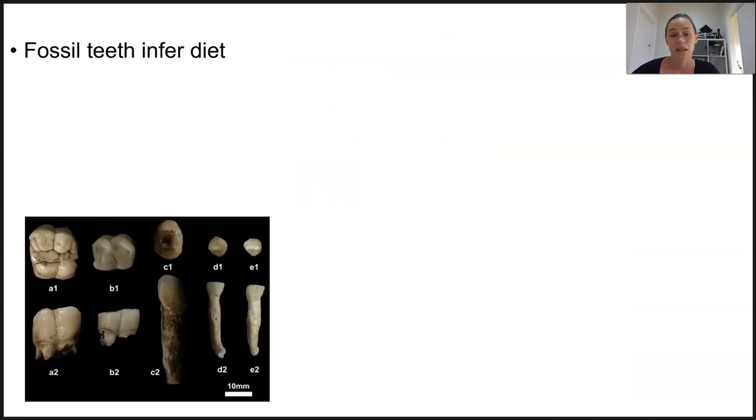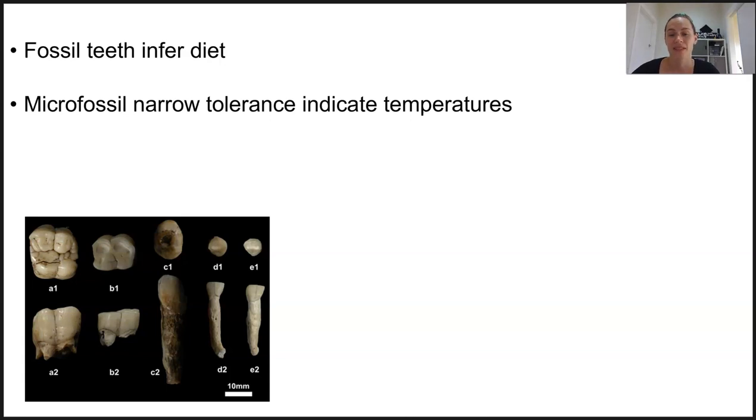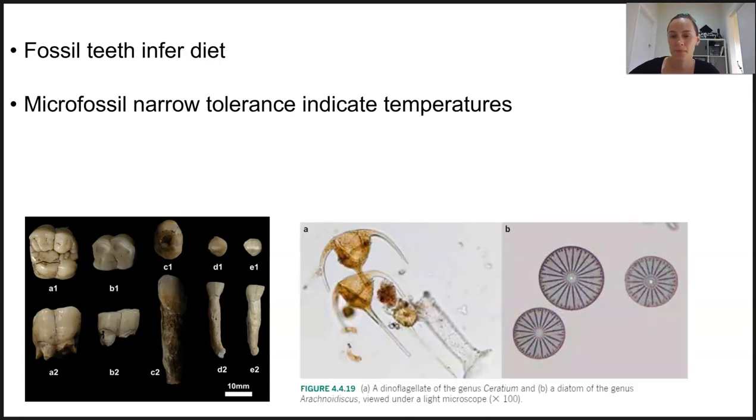Anatomy like teeth can be used to infer the diets of certain organisms and the presence of particular plants in the time period in which they existed. Microfossils have smaller temperature tolerance so their presence or absence in a particular period can help us to infer the approximate ocean temperatures. And pollen grain presence or absence can indicate what type of certain plants had evolved into existence by that stage.